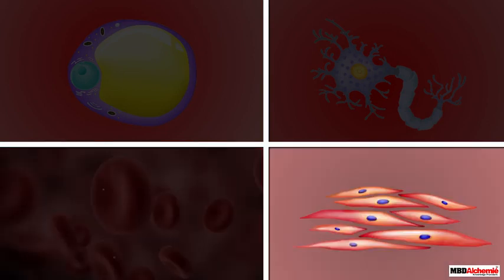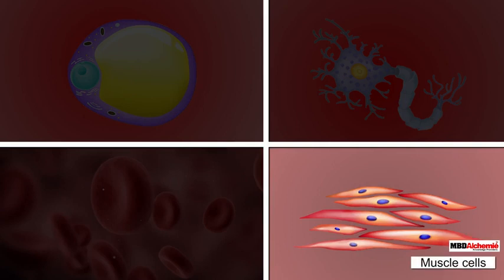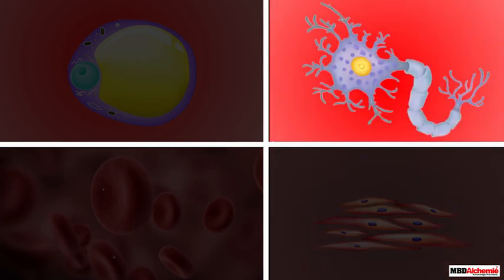There are some cells that are long and pointed at both ends, for example muscle cells. Sometimes the cells are quite long, for example nerve cells.